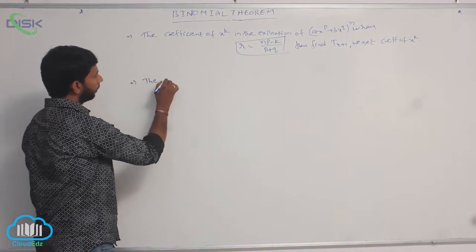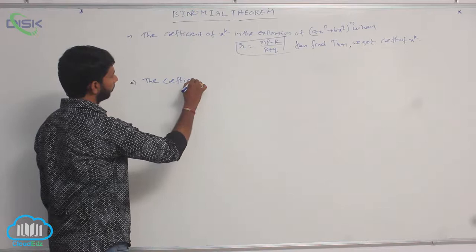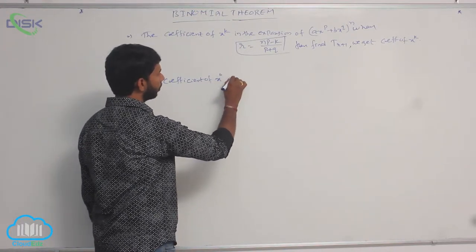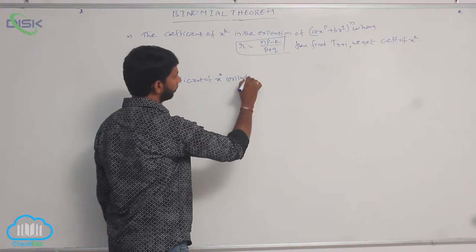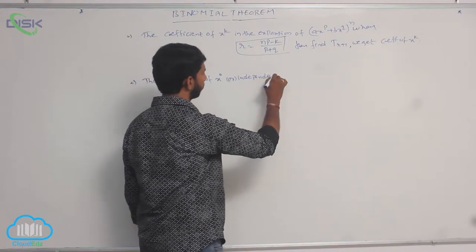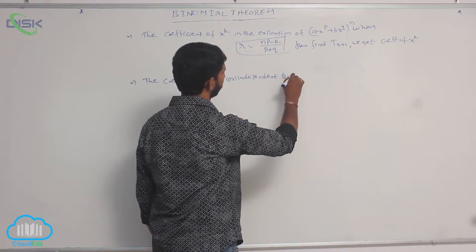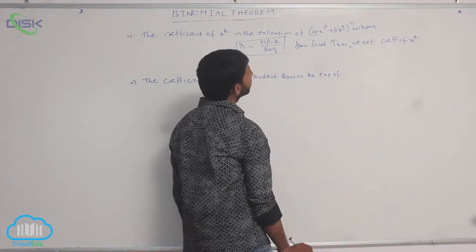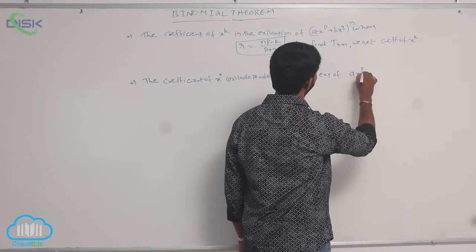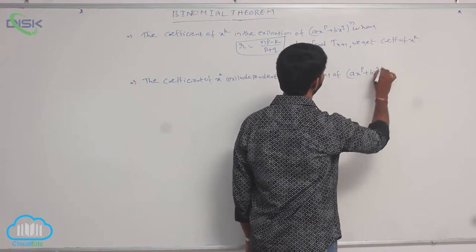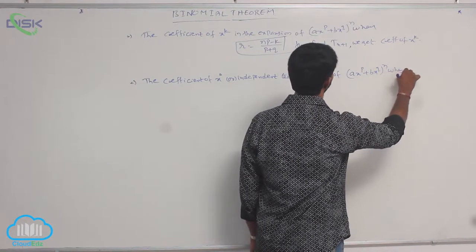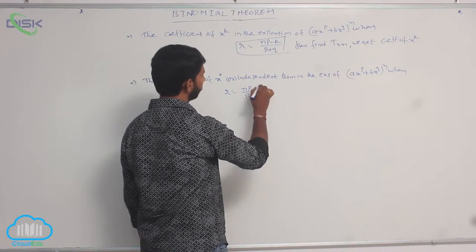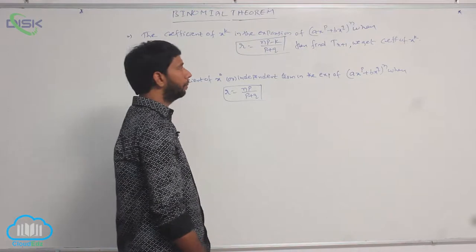For the coefficient of the independent term, the coefficient of x power 0 is the independent term in the expansion of (a·x^p + b·x^q)^n. Then r is equal to np divided by (p plus q).